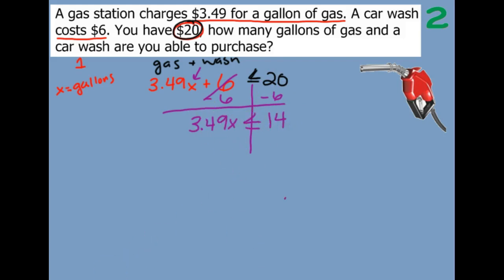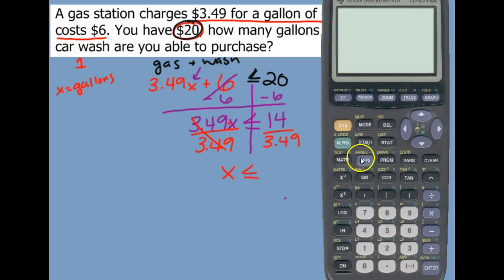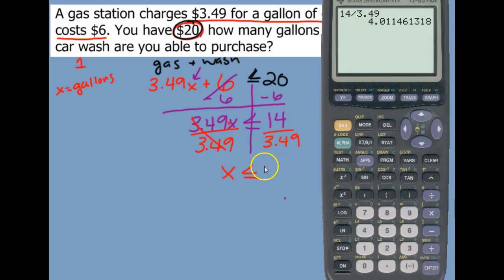Then the opposite of multiplying by $3.49 would be dividing by 3.49. Those eliminate — we have x is less than or equal to. I'm going to plug this into my calculator: 14 divided by $3.49 gives me 4.011.